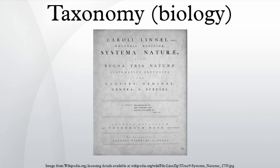Alpha taxonomy: The term alpha taxonomy is primarily used today to refer to the discipline of finding, describing, and naming taxa, particularly species. In earlier literature, the term had a different meaning, referring to morphological taxonomy, and the products of research through the end of the 19th century.